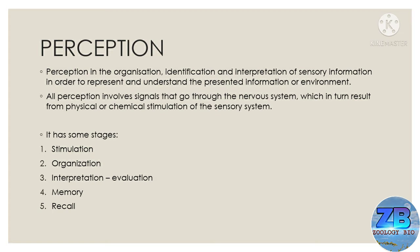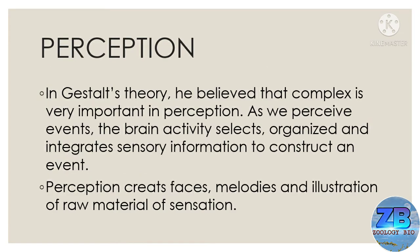The stages of how we perceive people include stimulation, organization, interpretation, evaluation, memory, and recall. These are the five stages that influence our perceptions. In Gestalt's theory, he believed that context is very important in perception. As we perceive events, the brain actively selects, organizes, and integrates sensory information to construct an event. Perception creates phases, melodies, and illusions from the raw material of sensation.